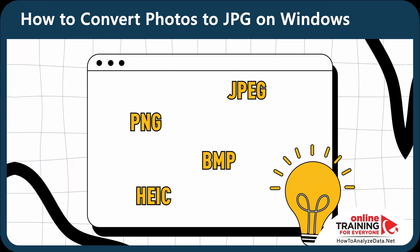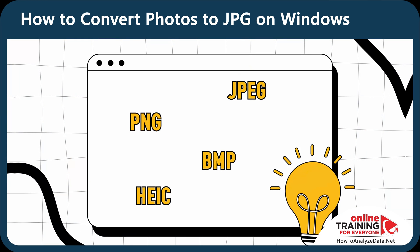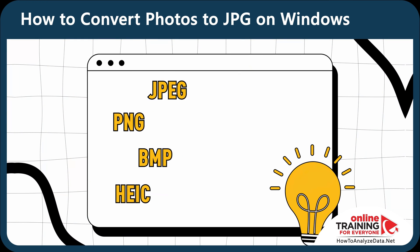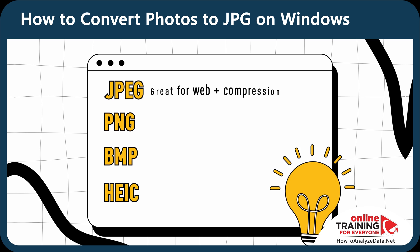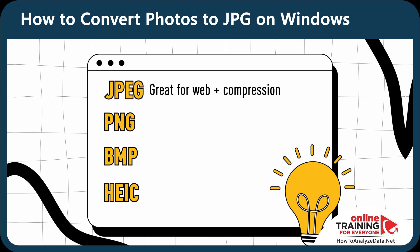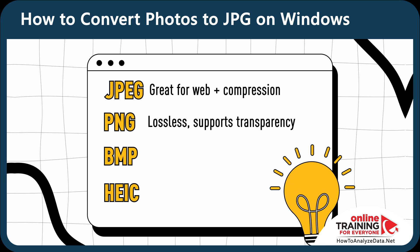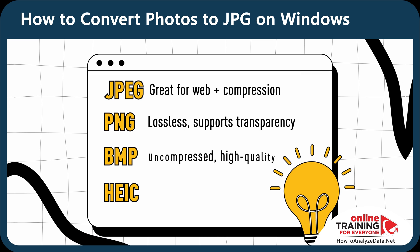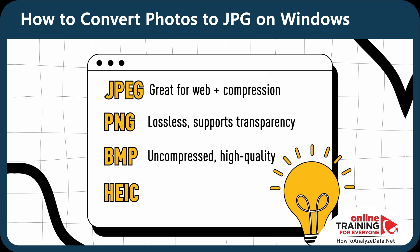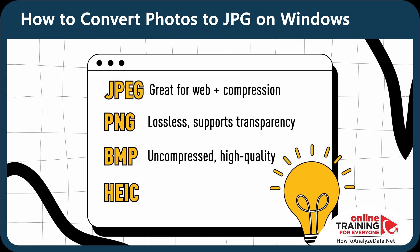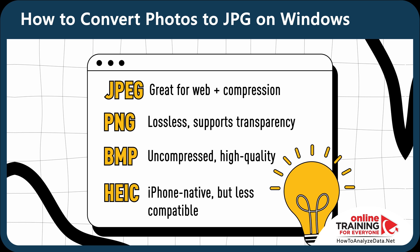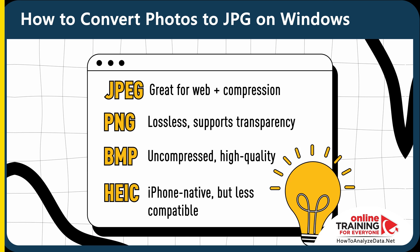Different formats are good for different purposes. JPEG is great for web use and compression. PNG format is lossless and supports transparency. BMP format is uncompressed but high quality. And HEIC format is native for iPhones but less compatible with other devices.